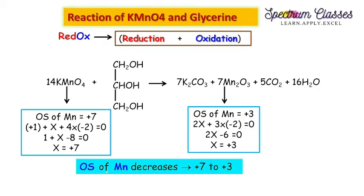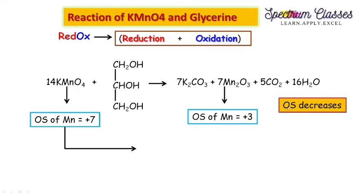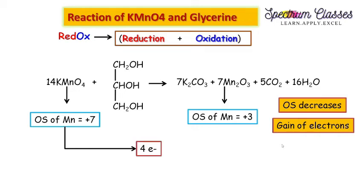What we infer here is that the oxidation state of Mn decreases from +7 to +3. This decrease in oxidation state occurs by gaining electrons. We have +7, and to get +3 we must add −4, meaning 4 electrons (since electrons have negative charge) are added. So to change its oxidation state from +7 to +3, KMnO4 gains 4 electrons.